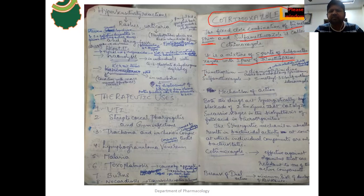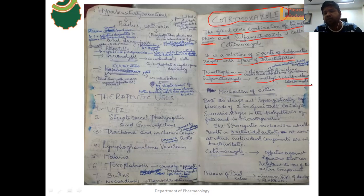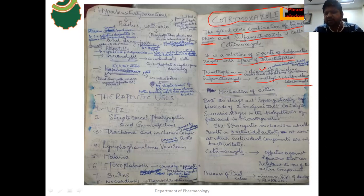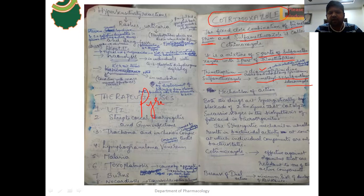Chemically, sulfamethoxazole is 5-methyl-3-sulfanilamido-isoxazole. Trimethoprim is a diaminopyrimidine — it is a pyrimidine analog which contains two amino groups. Trimethoprim is chemically related to an anti-malarial drug known as pyrimethamine. If you observe the basic ring of trimethoprim, it is similar to pyrimethamine.